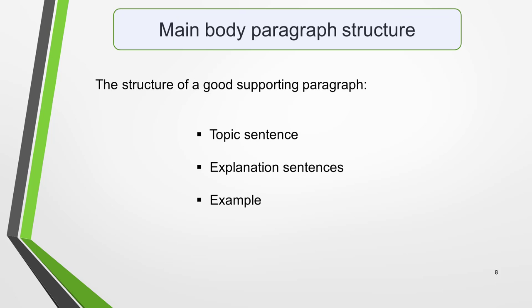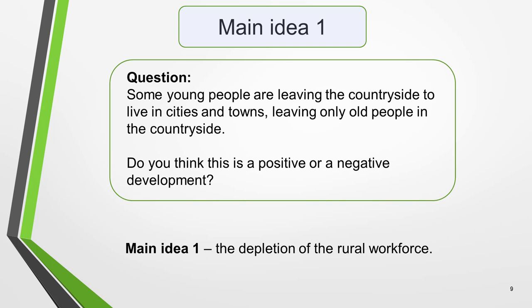We're now ready to start work on our main body paragraphs. Here's a reminder of the three-part structure: you need a topic sentence, explanation sentences, and an example. The overarching objective when writing a Task 2 essay is to give the examiner what they want to see. A happy examiner means high marks. Your essay must firstly answer the question, and secondly be structured in such a way that the ideas flow logically from one to another. Achieving this will gain you a high score for task achievement and cohesion and coherence. The topic sentence plays an important role here.